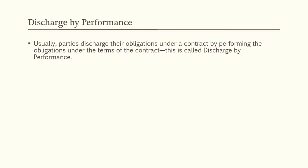The first way to complete or end a contract is called discharge by performance. Usually parties discharge their obligations under a contract by performing the obligations under the terms of the contract. This is called discharge by performance. The parties each perform their required duties under the contract and the contract ends naturally.